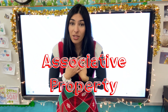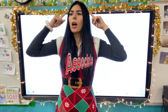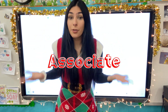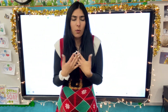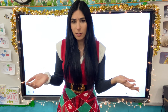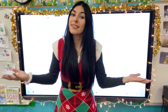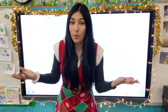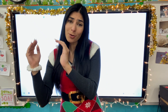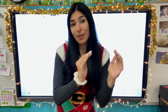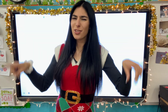I remember associative property because I think of the word 'associate,' and I tie this to friends. I like to associate with all kinds of different people — I have all sorts of different friends. So when we're talking about multiplication, our numbers can associate with different groups and they're all still friends.